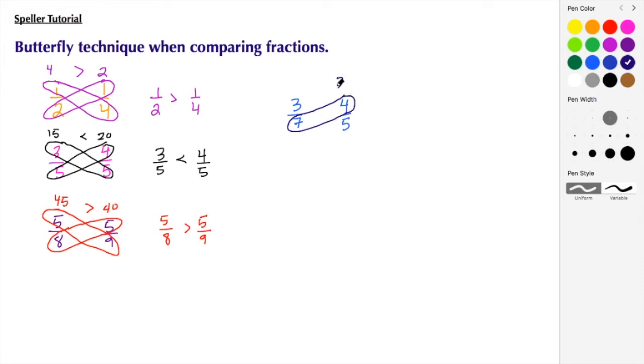7 times 4 to give us 28, and then 3 times 5 to give us 15. And here we see that 15 is less than 28, so we know that 3 sevenths is less than 4 fifths.